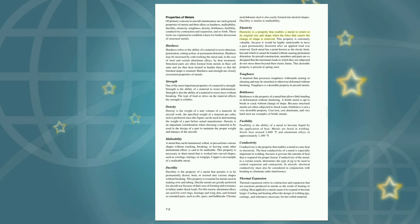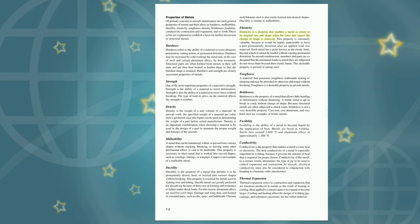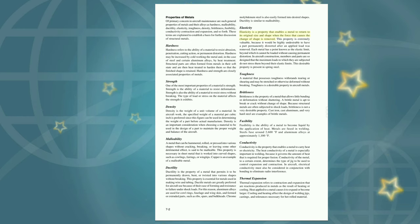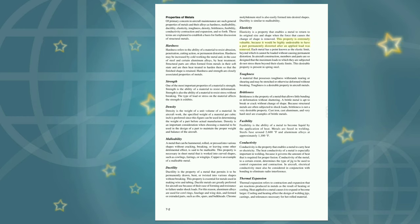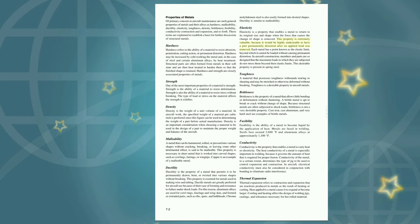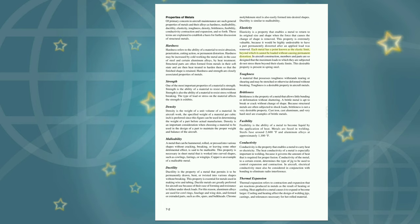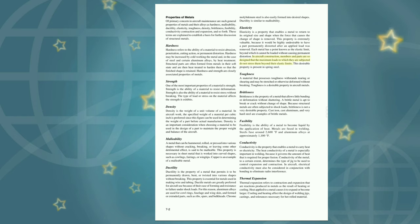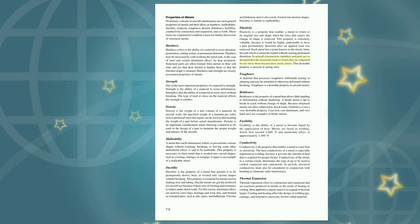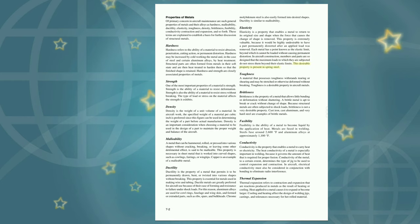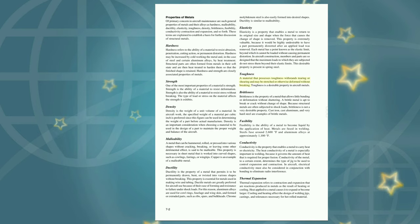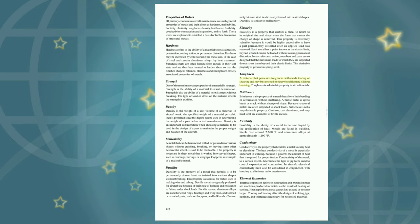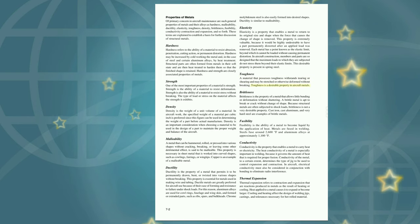Elasticity is a property that enables a metal to return to its original size and shape when the force that causes the change of shape is removed. This property is extremely valuable because it would be highly undesirable to have a part permanently distorted after an applied load was removed. Each metal has a point known as the elastic limit, beyond which it cannot be loaded without causing permanent distortion. In aircraft construction, members and parts are designed so that the maximum loads to which they are subjected do not stress them beyond their elastic limits. This desirable property is present in spring steel. Toughness: A material that possesses toughness can withstand tearing or shearing and may be stretched or otherwise deformed without breaking. Toughness is a desirable property in aircraft metals.